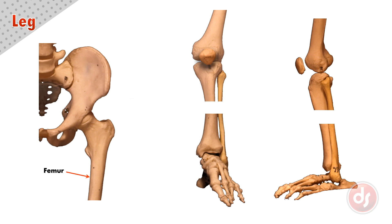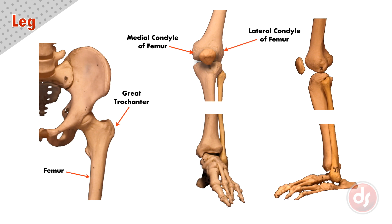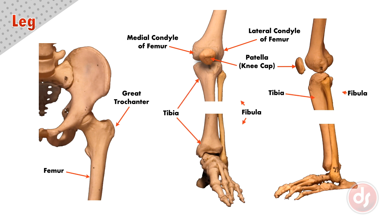Our femur connects into a deep socket on the side of the ilium. On top of the femur there is a large rough protrusion called the great trochanter that aids in muscle attachment. At the bottom of the femur are two large round sections called the medial condyle for the inner one and the lateral condyle for the outer one. On the front we have our kneecap called the patella, which creates protection for the leg joint and leverage for our muscle attachments. Below is the large bone of the lower leg called the tibia. To remember which is which, I like to think of tibia as a big strong word and fibula as a little small word.